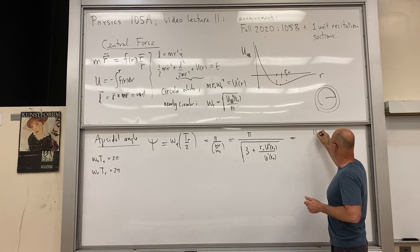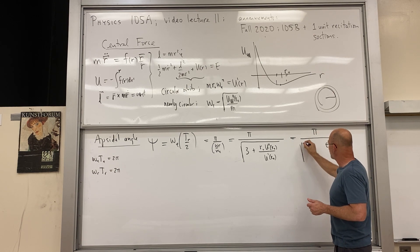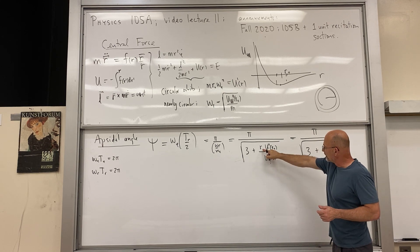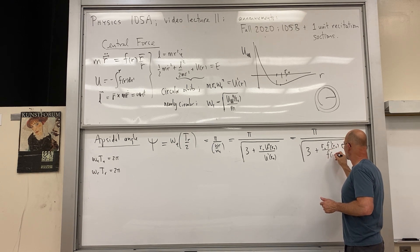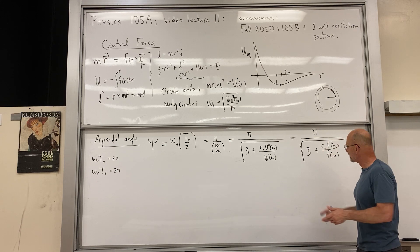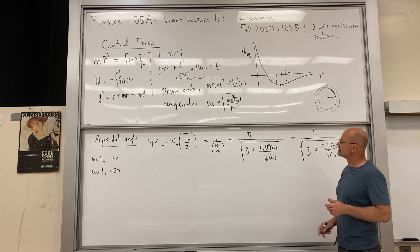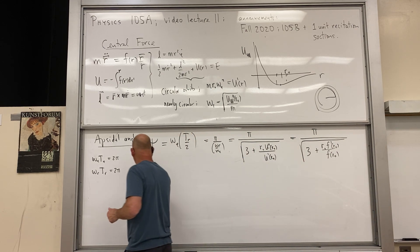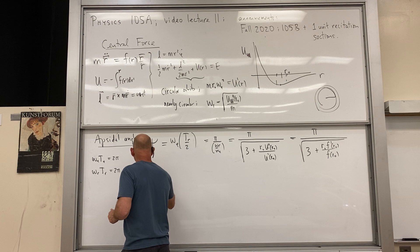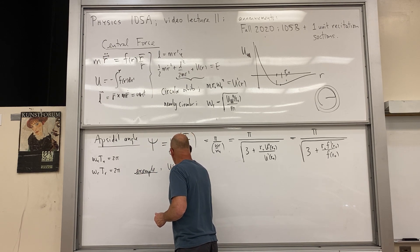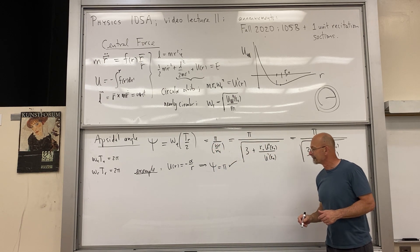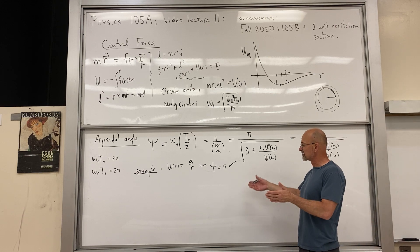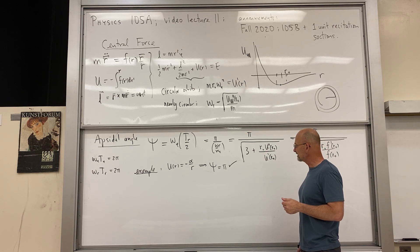Don't mistake this for the effective potential — we're talking about the actual potential energy function. We can also write an equivalent version in terms of force: the denominator involves f′(r₀) / f(r₀). As an example, for U(r) = -α/r, this absolute angle turns out to be exactly π, which corresponds to the closed Kepler ellipse orbit. That's to be expected.